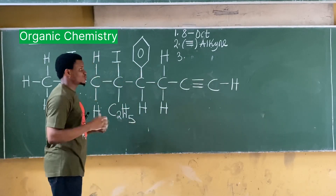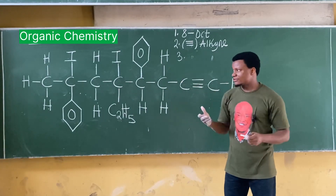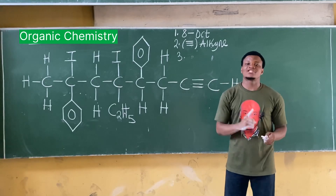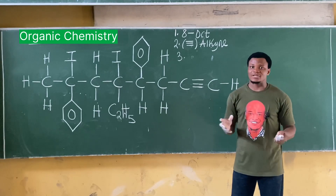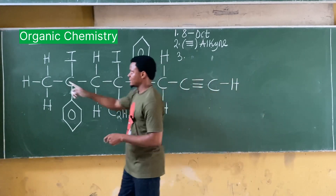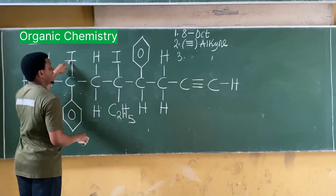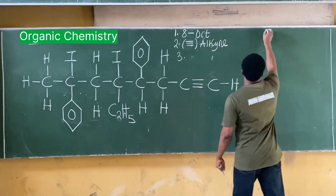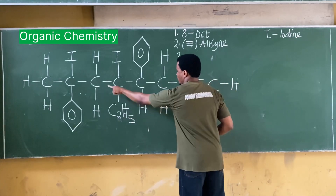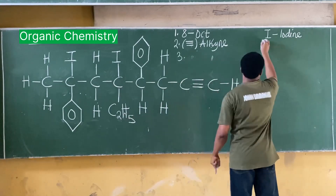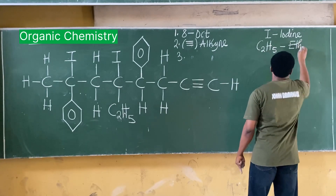The third rule is to identify the substituents. A substituent is any atom or molecule attached to the parent carbon chain that is not hydrogen. Hydrogen is not considered a substituent, but other attachments are. Here I have 'I' — iodine — as my first substituent.